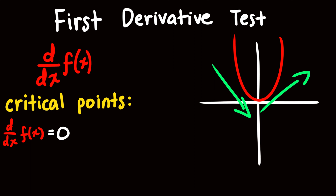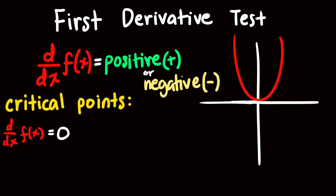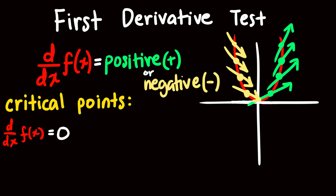We know that the derivative is the rate of change of a tangent line at a specific point. So that means if the derivative is equal to zero, it means the rate of change is zero, meaning that the tangent line is horizontal. The same applies to determining if a function increases or decreases. If the derivative is positive at a point, it increases because a positive slope means it's increasing. And if the derivative is negative at a point, it decreases because a negative slope means it's decreasing.